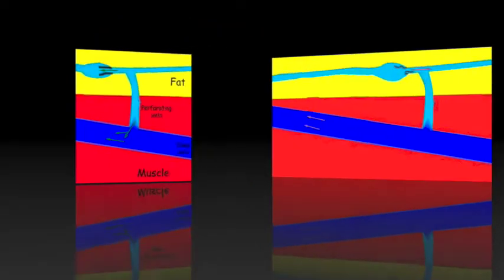The next animation shows perforator vein reflux. Again, in light blue are the superficial veins and the deep vein is shown in dark blue. The red is the calf muscle. In this case, you can see blood from the deep veins going into the superficial vein, or feeding the tributaries of the superficial veins.